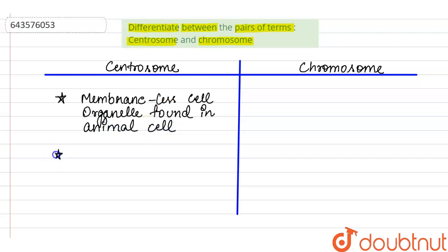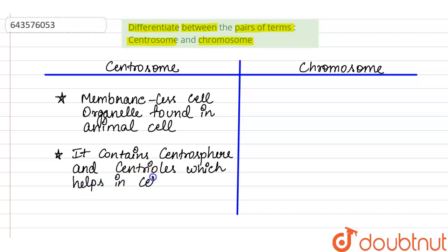What is its function? It contains centrosphere and centriole, which helps in cell division. So this is a very important structure during cell division in animal cell.